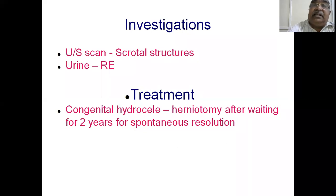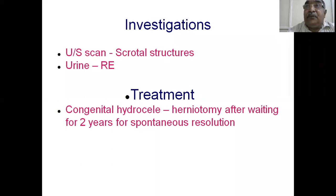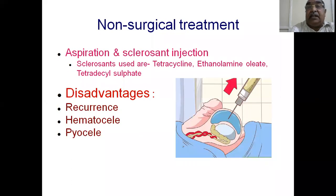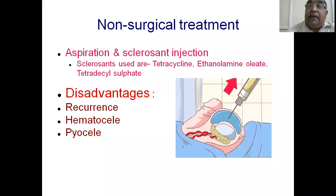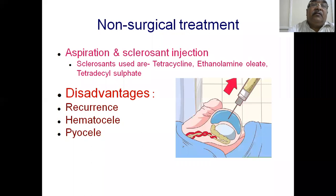If after two years the swelling is still present, surgery is indicated. The surgery is herniotomy — disconnecting the processus vaginalis from the peritoneal cavity. In adult hydrocele, surgical and non-surgical treatments are available. Secondary hydrocele is not commonly treated separately — if the primary cause is treated, the secondary hydrocele resolves by itself. This leaves primary hydrocele and hydrocele of the spermatic cord. Hydrocele of the spermatic cord presents as a small swelling and can be excised surgically.